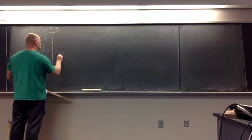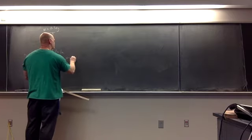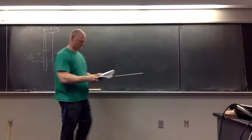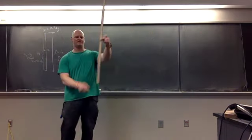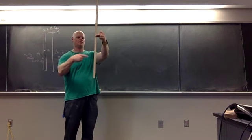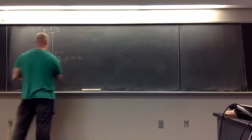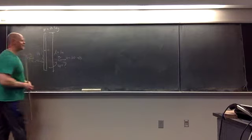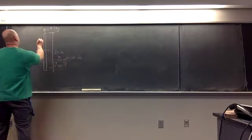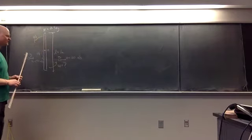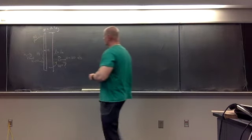The bullet comes out the other side with exactly the same mass, but now moving with a slower velocity equal to 160 meters per second. When this happens, the rod — which is pivoted at the center — gets hit, and then starts to rotate. What I want to know is: what is the angular velocity of the rod? How fast is this rod going to rotate about the center pivot point?